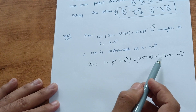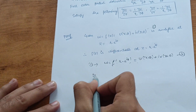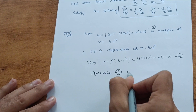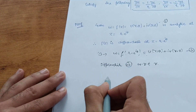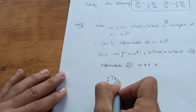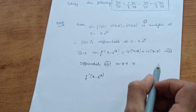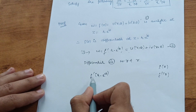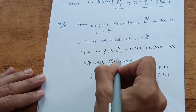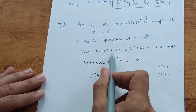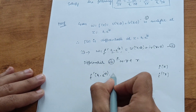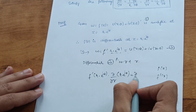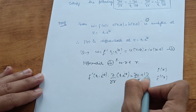Differentiate equation two with respect to r. The left-hand side gives f'(r·e^(iθ)) multiplied by the internal derivative ∂/∂r of (r·e^(iθ)), and the right-hand side gives ∂u/∂r + i·∂v/∂r. Since e^(iθ) is constant with respect to r, the internal derivative is simply e^(iθ)·1 = e^(iθ).